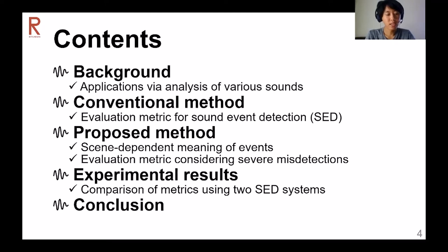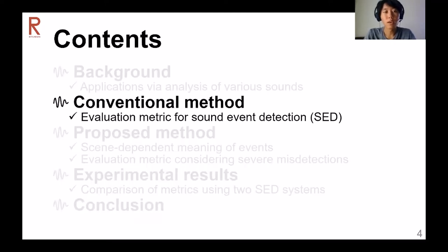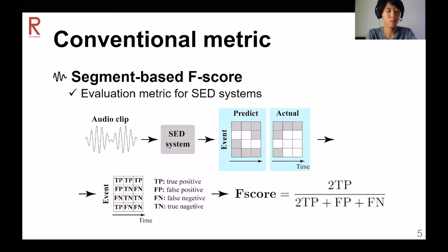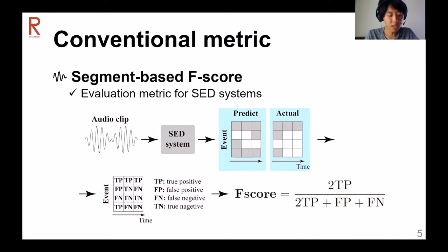Moving on to the next topic: conventional methods — the evaluation metric for sound event detection. Segment-based F-score is a commonly used evaluation metric for sound event detection. As shown in the procedure, true positive, false positive, and false negative are aggregated, and the segment-based F-score is then calculated. In this work, we focus on the segment-based F-score. Also, our method can be utilized in both segment-based and event-based metrics.